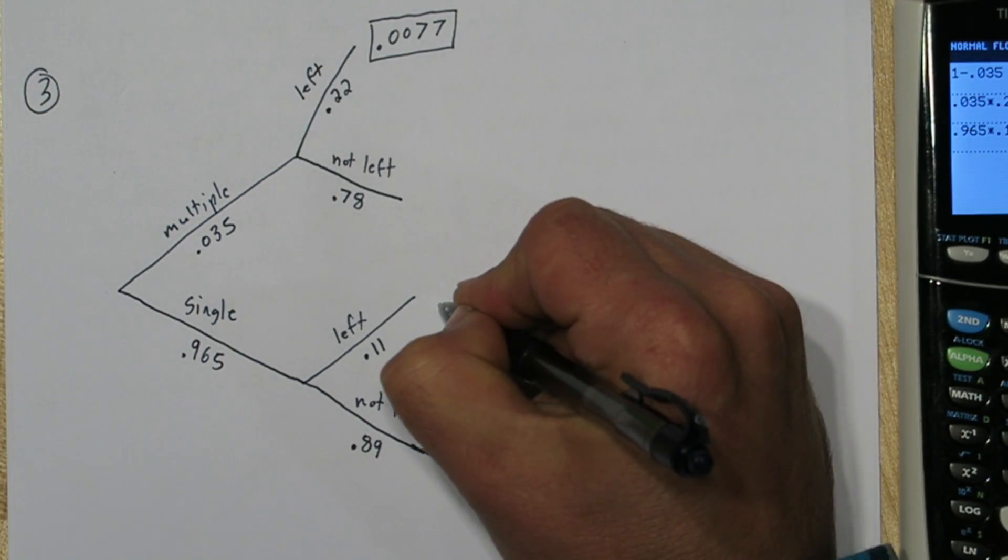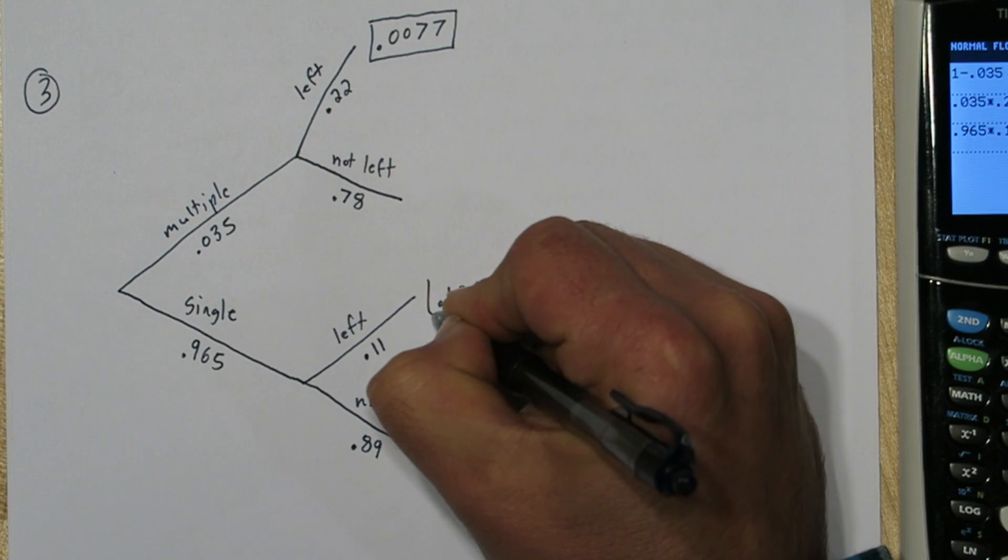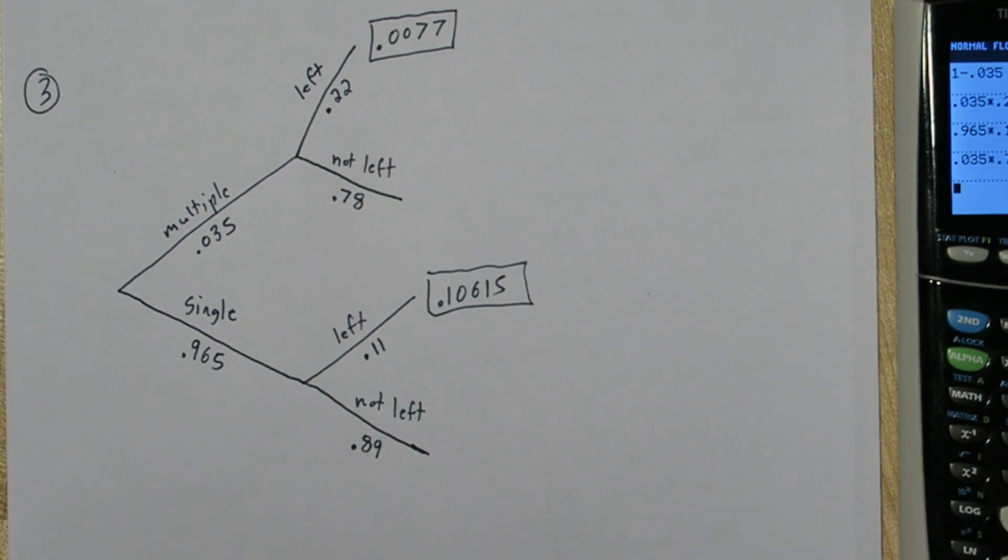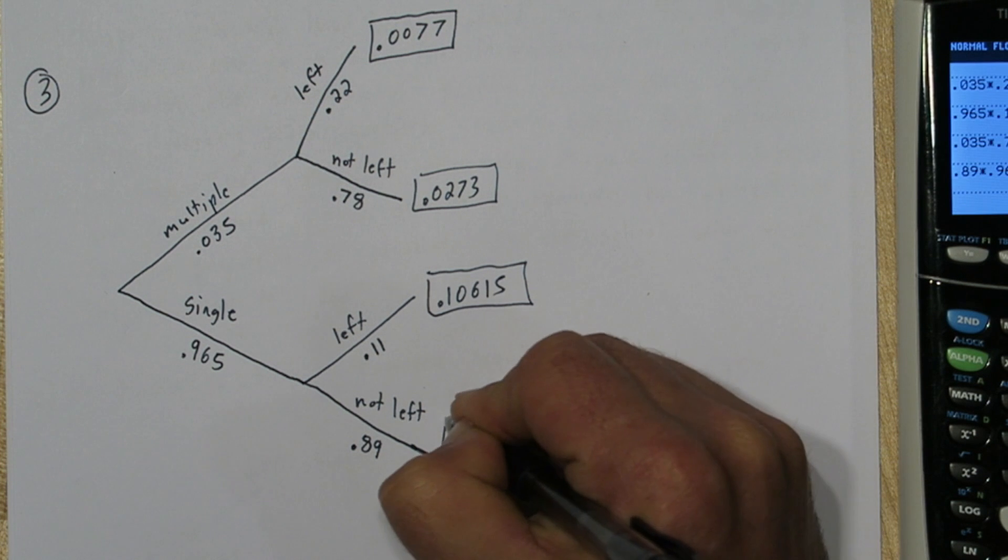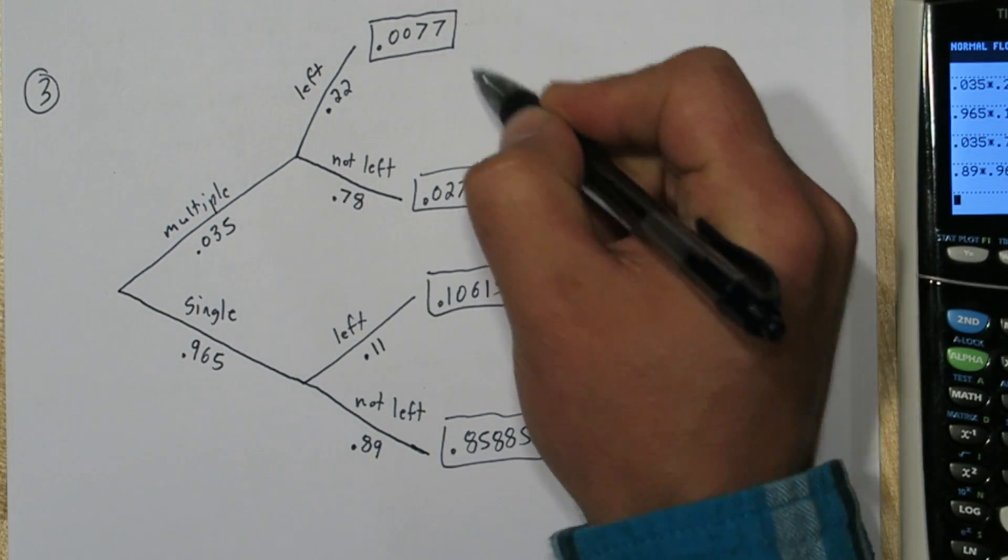We can do the same thing to find the probability a child from a single birth is left handed. And let's actually do this for the not left handed probabilities as well. Notice all these boxed probabilities add to 1. That's because they represent any possible scenario.